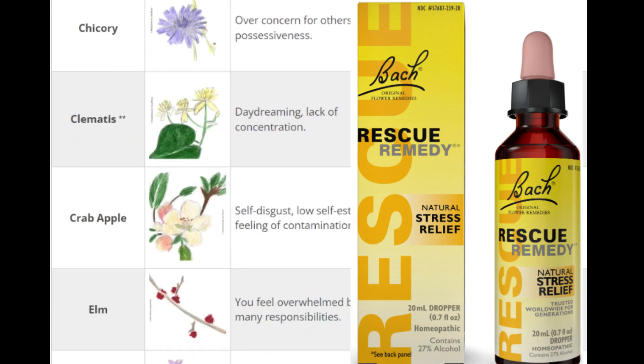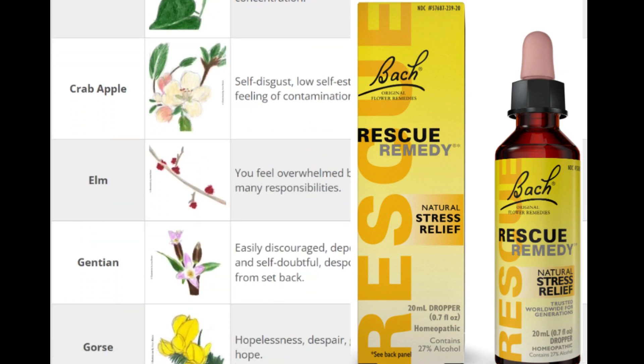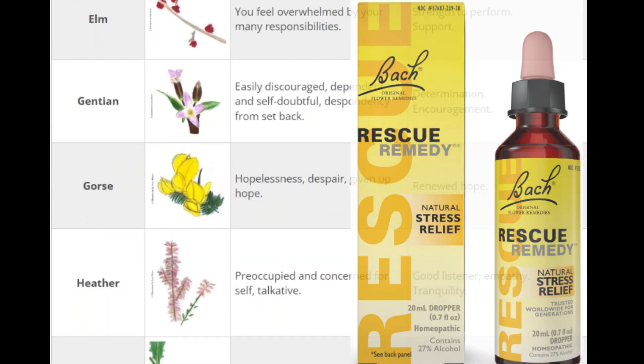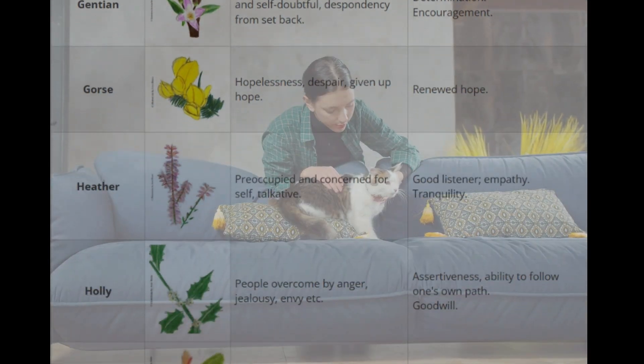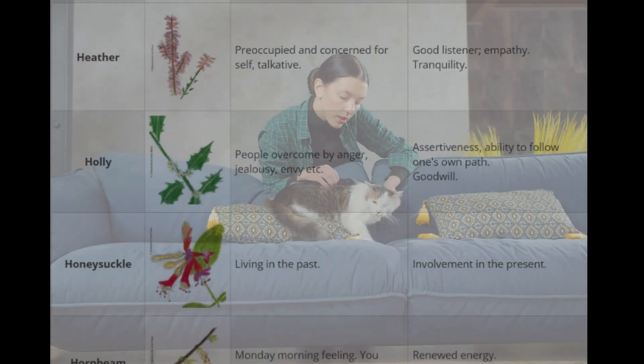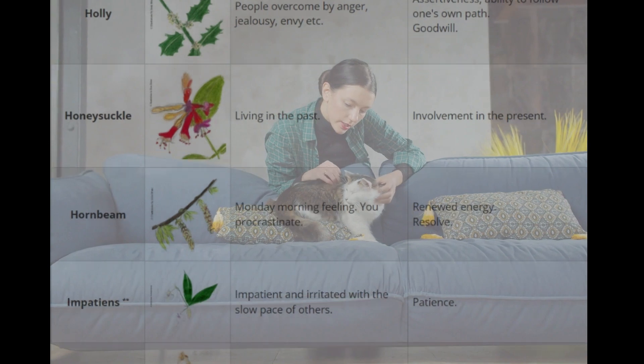Bach developed 38 flower essences or remedies to supposedly alleviate negative emotions or pain and restore health. Each essence is designed to treat a different set of symptoms. Rescue Remedy is a combination of some of these essences that supposedly treat shock and panic attacks and are often used for animals that are injured, scared, or being transported.